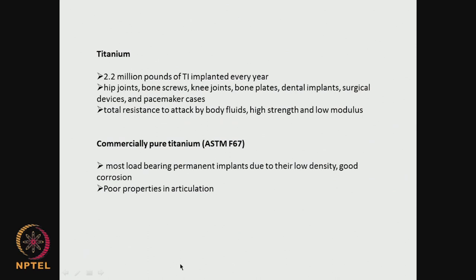Titanium is used quite a lot — 2.2 million pounds of titanium implanted, which is a big number. Hip joints, bone screws — if a metal is kept next to a broken bone, they are connected by screws. Knee joints — a lot of metals and alloys, cobalt-chromium are used. Bone plates — stainless steel, titanium. Dental implants, surgical devices, pacemakers — all these use titanium.